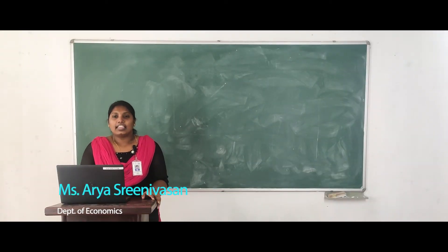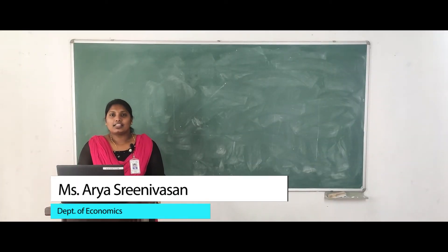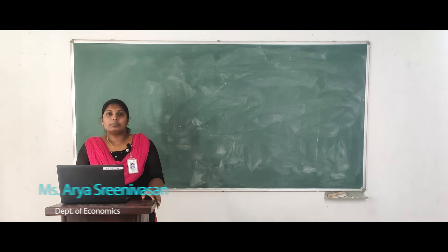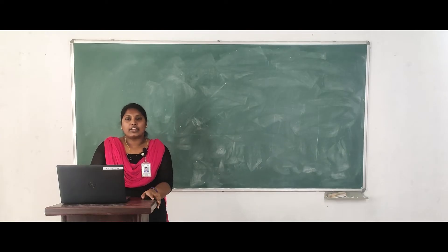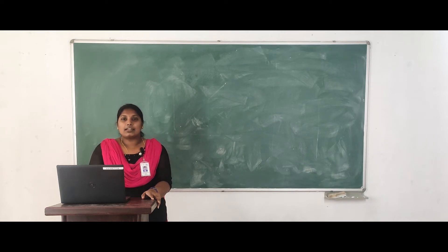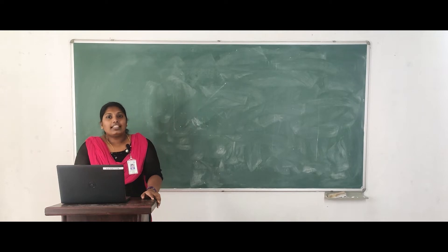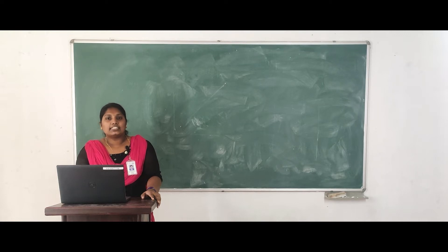Good morning. In this class, we are going to deal with the problems of econometrics or limitations of econometrics. There are so many assumptions regarding the classical linear regression model. The violation or the deviation of these assumptions is known as the problem of econometrics. There are mainly three limitations: first, multicollinearity; second, autocorrelation; and third, heteroscedasticity.